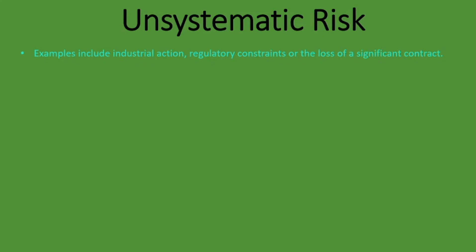Examples of unsystematic risk include industrial action, regulatory constraints, or the loss of a significant contract. Industrial action may affect a specific firm or an entire industry. Regulatory constraints that adversely affect a specific firm or industry are unsystematic because they don't affect the entire market. The loss of a significant contract is likely dealing with a specific firm that depends on that contract for its sales or revenue.